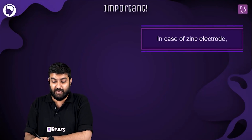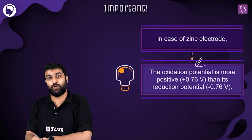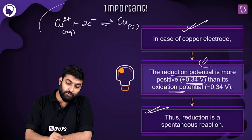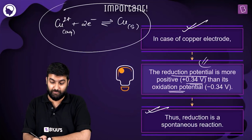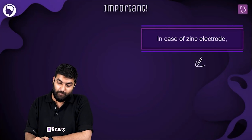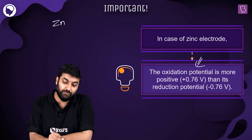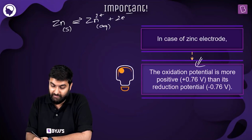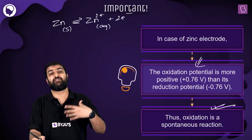For zinc, the oxidation potential is positive — in contrast to copper where reduction was positive. This means that for zinc, losing electrons and becoming Zn²⁺ is the more favored direction. So oxidation is more favorable for zinc, while reduction is more favorable for copper.